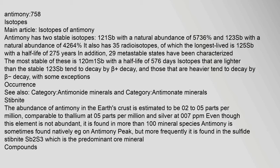Black antimony has the same crystal structure as red phosphorus and black arsenic; it oxidizes in air and may ignite spontaneously at 100°C. Antimony has two stable isotopes: 121Sb with a natural abundance of 57.36% and 123Sb with a natural abundance of 42.64%. It also has 35 radioisotopes, of which the longest lived is 125Sb with a half-life of 2.75 years.